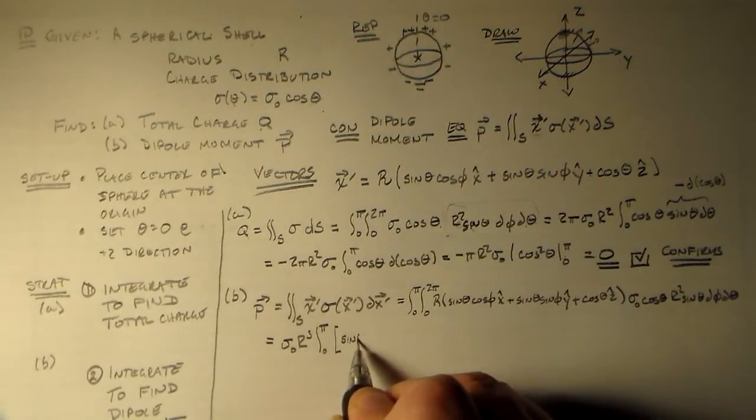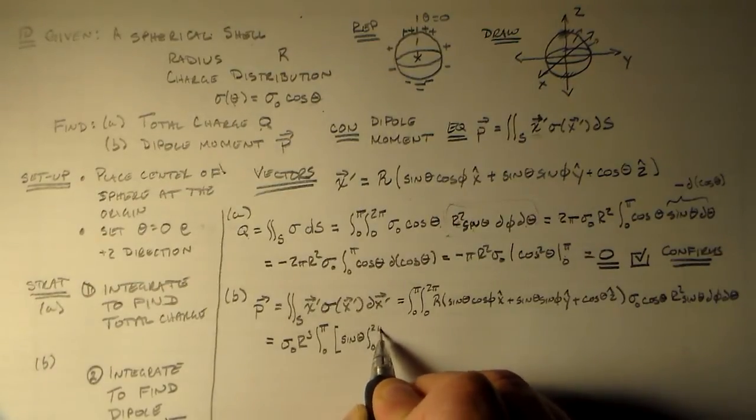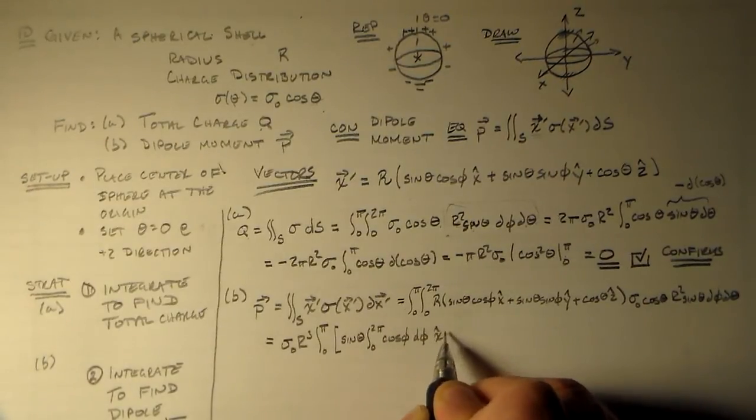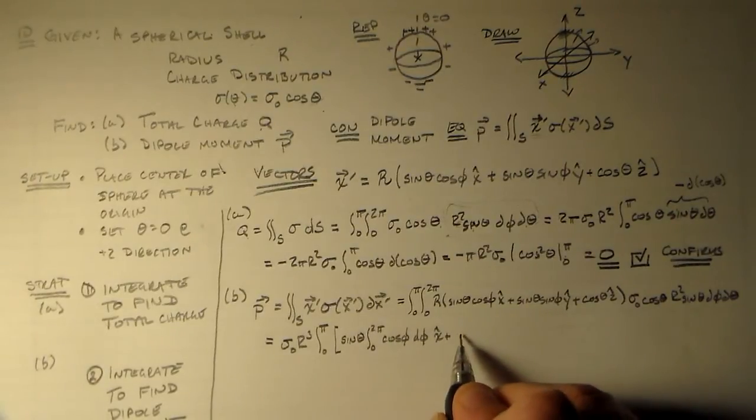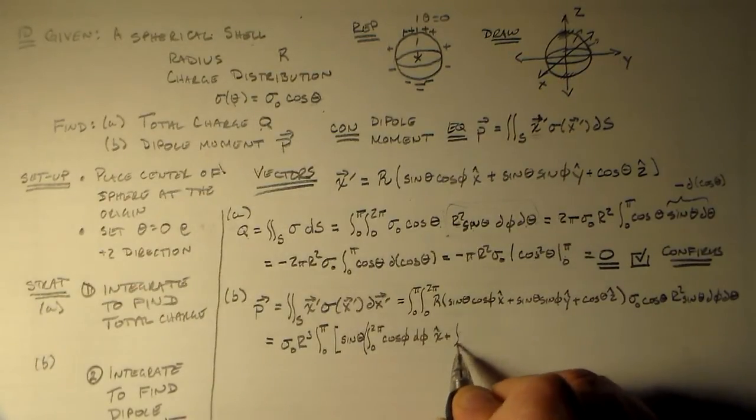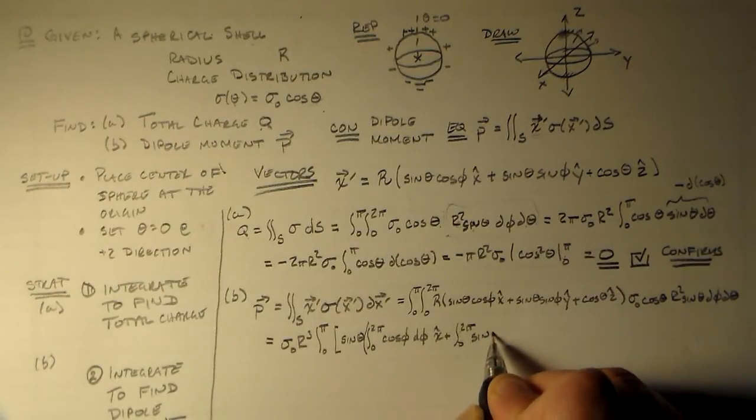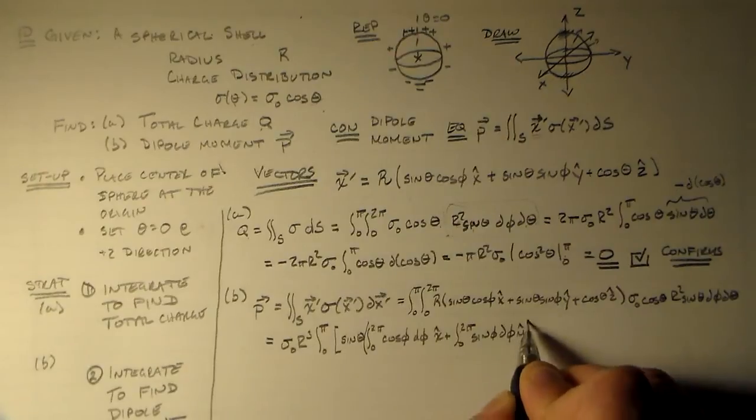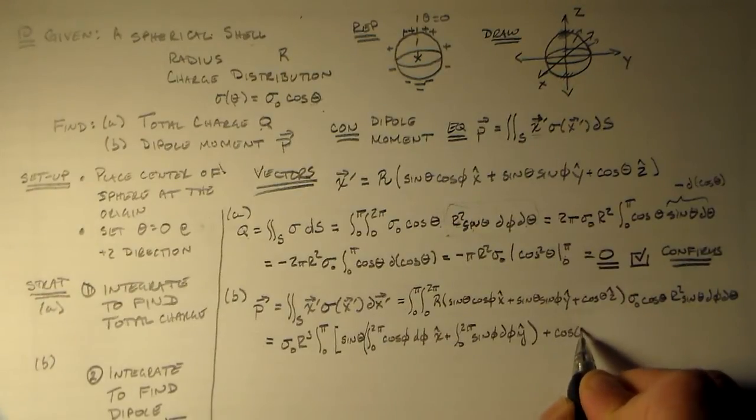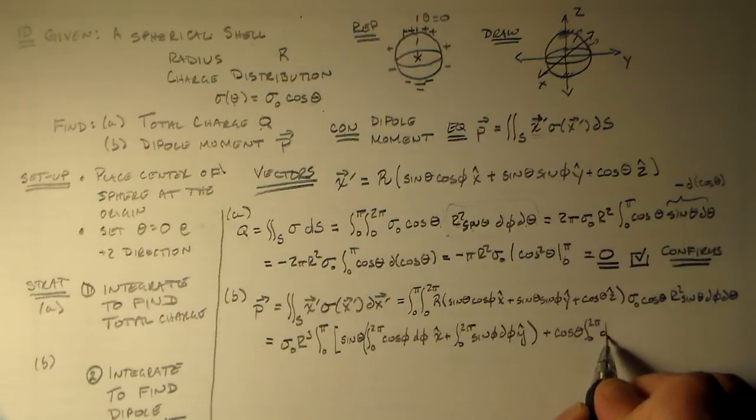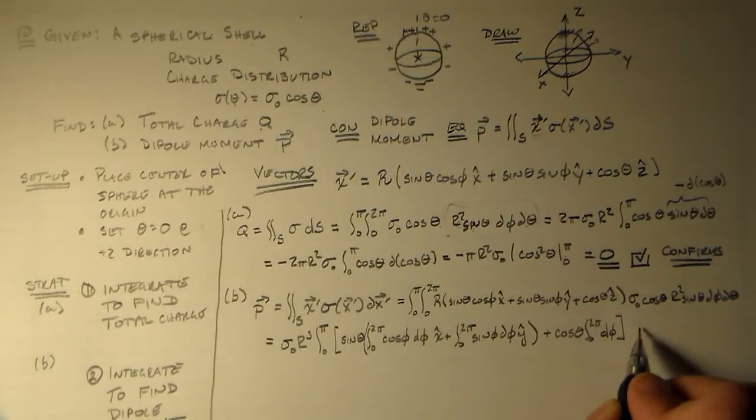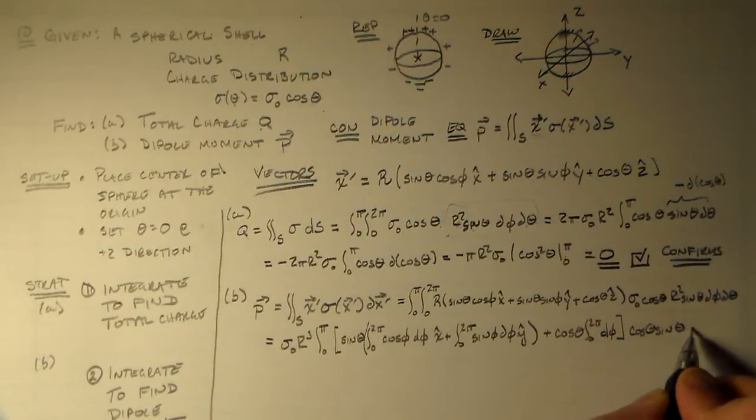So we've got sine squared theta times the integral of 0 to 2 pi, sine phi d phi in the y hat direction. Plus cosine theta times the integral from 0 to 2 pi, d phi. So that's just the integral of 1. So nothing amazing. We got rid of that guy. We still have a cosine theta and a sine theta and a d theta.